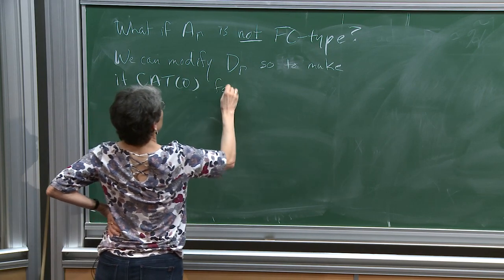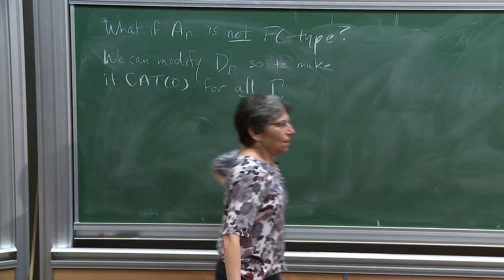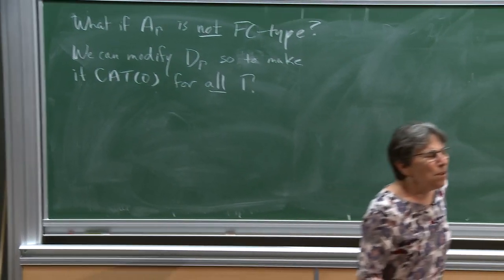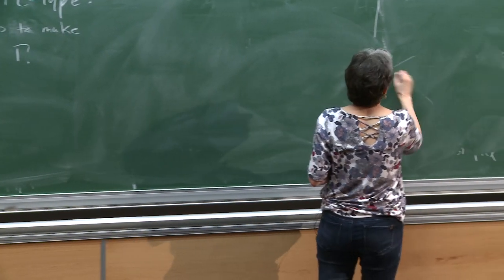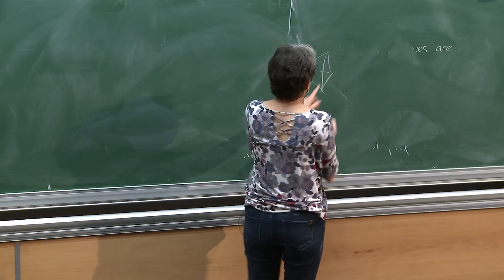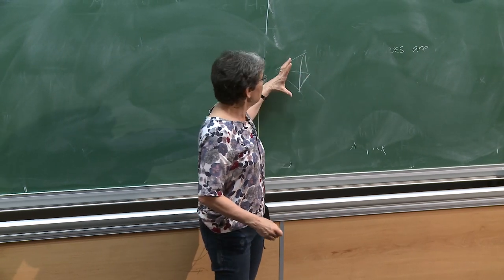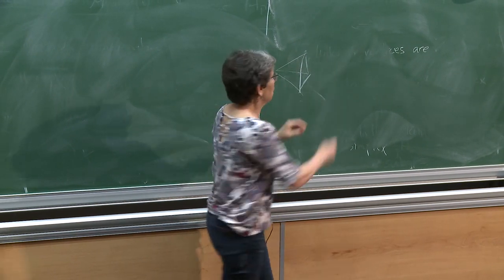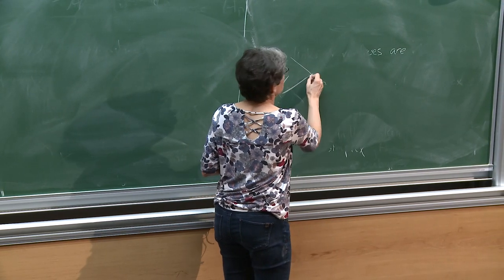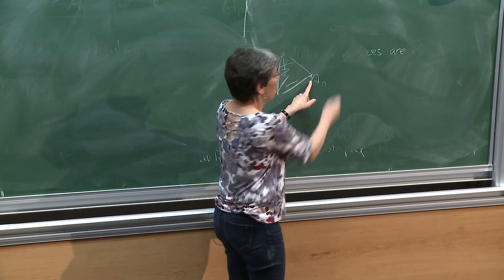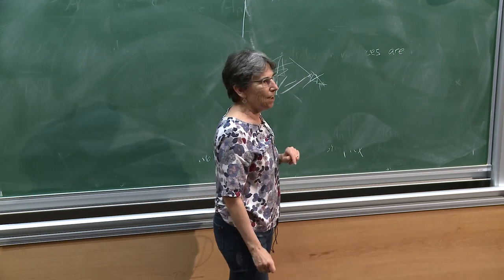It turns out we can modify D(γ) to make it CAT(0) for all γ. What went wrong with D(γ)? Things were pairwise joined, they spanned a clique, but we couldn't finish the cube — A_T wasn't finite type.